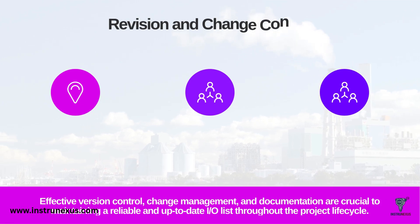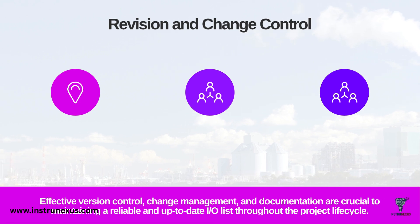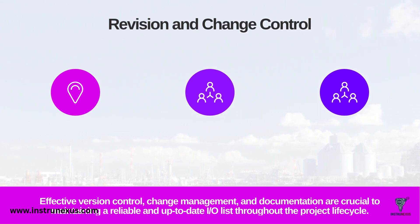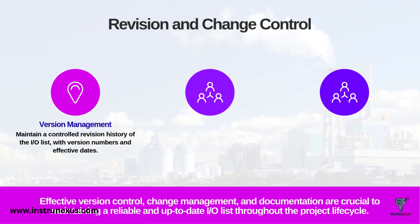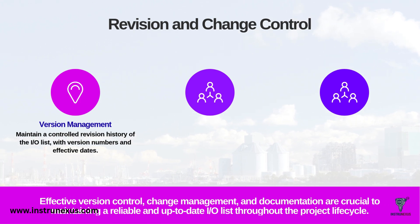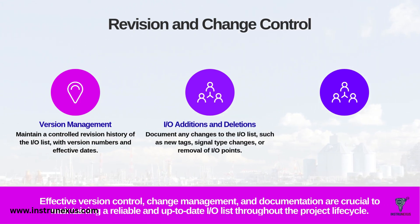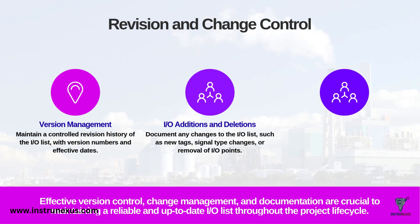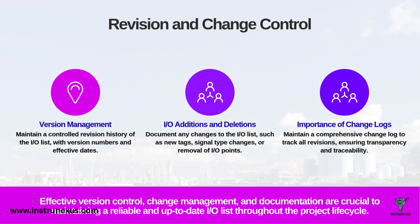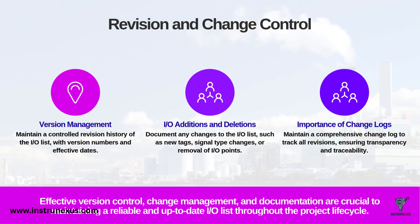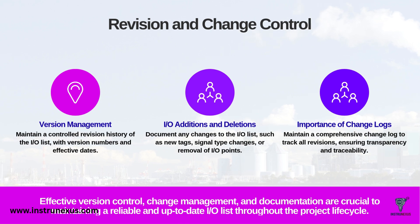Because the IO List is a living document, revision and change control is not just good practice – it's essential. There are three pillars of effective change control. First, version management: maintain a controlled revision history complete with version numbers and effective dates so everyone knows they are working from the latest correct version. Second, IO additions and deletions: as the project evolves, tags will be added, removed or have their signal types changed. Every single change must be formally documented in a change log. This log is vital for transparency and traceability – when a problem arises during commissioning, the change log is the first place you'll look. Effective change control is crucial to maintaining a reliable IO List and a sane project.